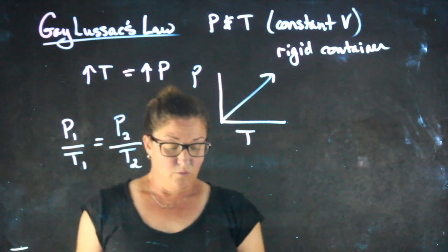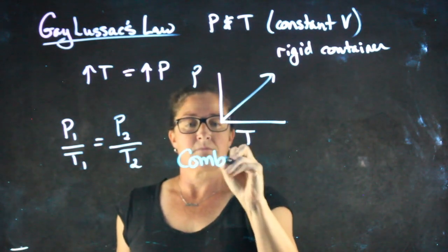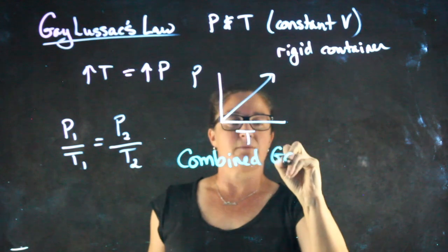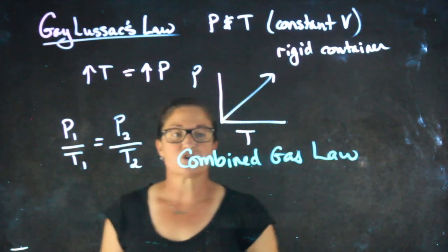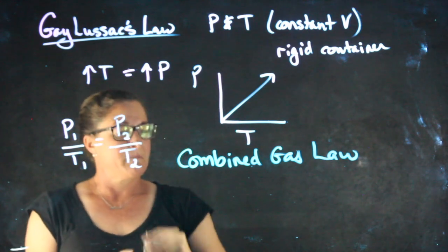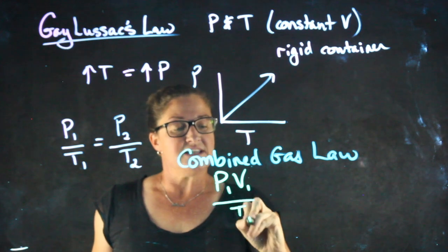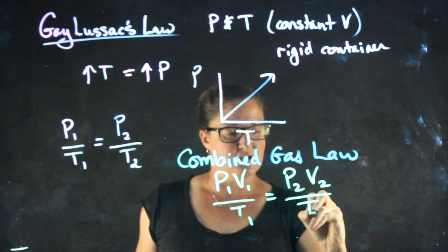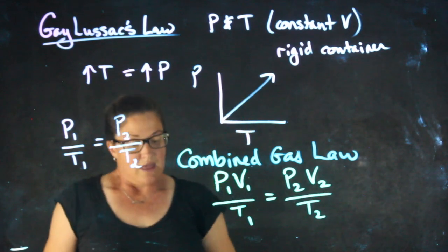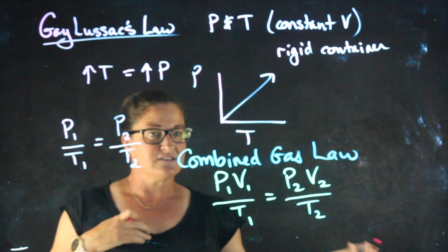This is going to move us into what is known as our combined gas formula. The combined gas formula, or the combined gas law, is going to allow us to look at pressure, volume, and temperature all at once. P1V1 over T1 equals P2V2 over T2. In this formula, pressure and volume any units as long as they match.